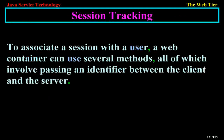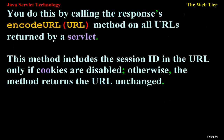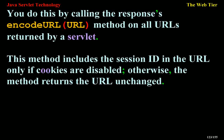Session tracking: to associate a session with a user, a web container can use several methods, all of which involve passing an identifier between the client and the server. The identifier can be maintained on the client as a cookie, or the web component can include the identifier in every URL that is returned to the client. If your application uses session objects, you must ensure that session tracking is enabled by having the application rewrite URLs whenever the client turns off cookies. You do this by calling the response's encodeURL method on all URLs returned by a servlet. This method includes the session ID in the URL only if cookies are disabled; otherwise, the method returns the URL unchanged.